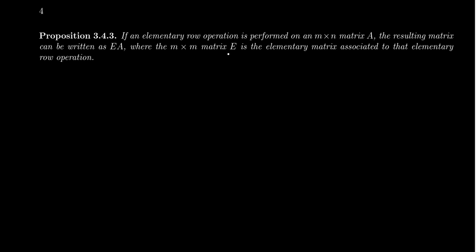Summarizing what we've seen: if an elementary row operation is performed on an m by n matrix A, the resulting matrix can be written as E times A, where E is the m by m elementary matrix associated to that operation. Multiplying by an elementary matrix does the exact same thing as performing a row operation on a matrix. This connection between row operations and matrix multiplication is going to be the key to finding the inverse of a matrix, which we'll see in the next video.